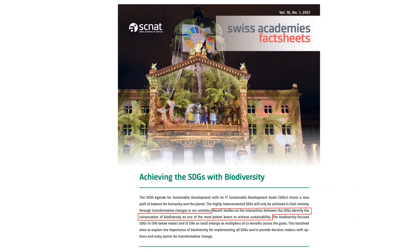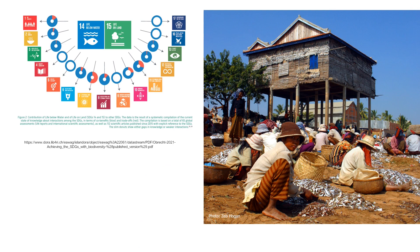Let's look at some of the other policy areas where biodiversity information is important. There's an appreciation that biodiversity, including freshwater biodiversity, has a central role to play in achieving sustainable development. This is evident from a recent publication on the Sustainable Development Goals, the SDGs. It notes that conservation of biodiversity is one of the most potent levers for sustainability, and highlights the importance of SDGs 14 and 15, addressing biodiversity on land and in water, for securing many of the other SDGs. The co-benefits are shown proportionately in blue in these circles, and the trade-offs are shown in red.